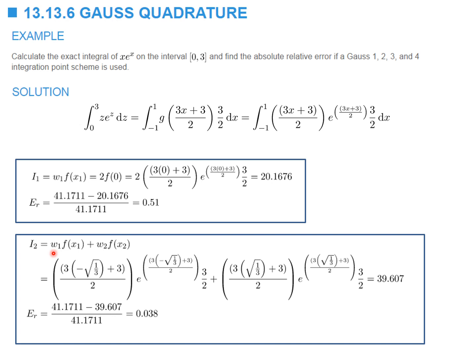With two integration points, the numerical integral equals w1 times f1 plus w2 times f2. Each weight equals one. The integration points are x1 equals negative square root of 1 over 3 and x2 equals positive square root of 1 over 3. Substituting these into the function and adding the two expressions gives 39.607. The relative error is 0.038, about 3.8% — already very accurate using just two integration points.